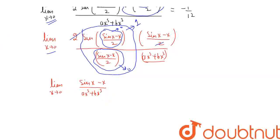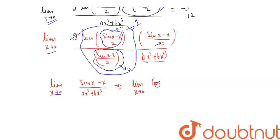Again, as x tends to 0, the numerator sin x − x tends to 0 and the denominator also tends to 0, giving a 0/0 indeterminate form. Applying L'Hôpital's rule, we differentiate: numerator becomes cos x − 1, and denominator becomes 5ax⁴ + 3bx². As x tends to 0, cos x → 1 so the numerator is 1 − 1 = 0, and the denominator also tends to 0. We again have 0/0.